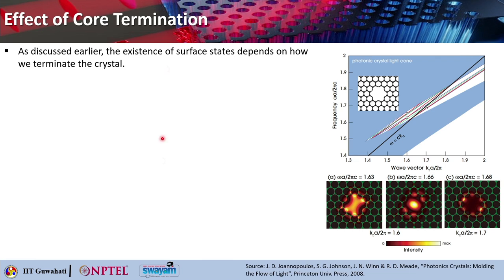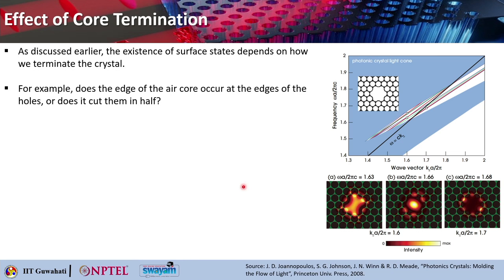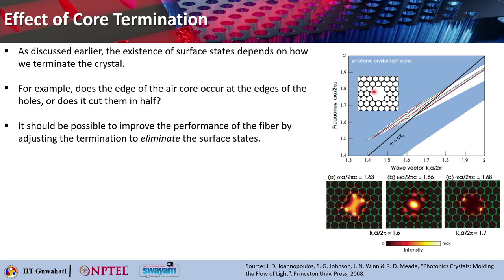We have discussed earlier that the existence of surface states depends on how we basically terminate the crystal. This was the point at k_z a / 2π equals 1.7, where we found a surface state. The question comes: does the edge of the air core basically occur at the edge of the holes, or does it cut them in half? There is a possibility to improve the performance of the fiber by adjusting this termination, which could eliminate the surface states.